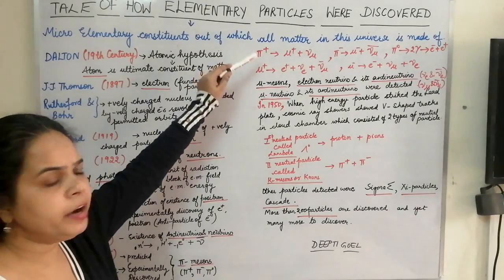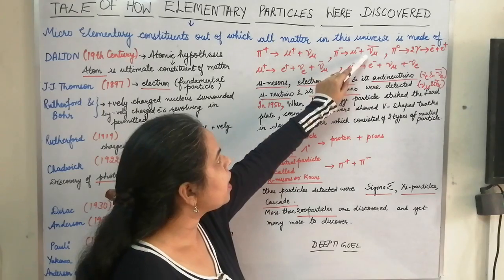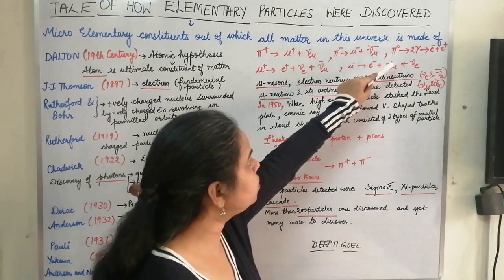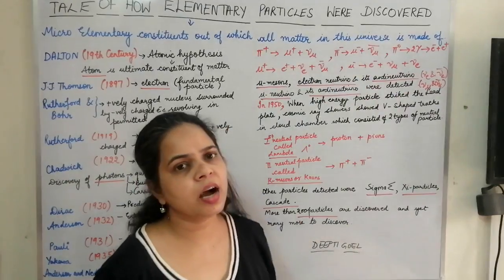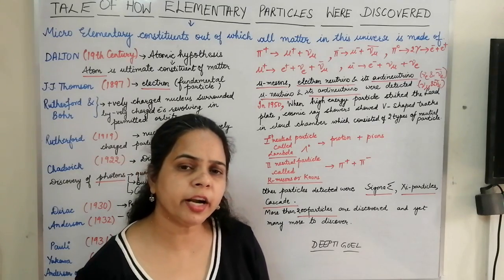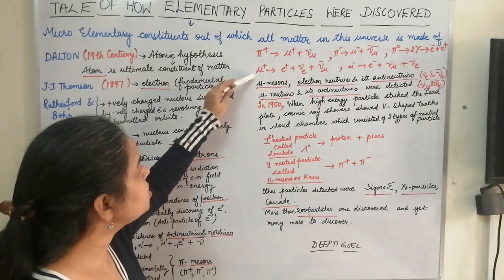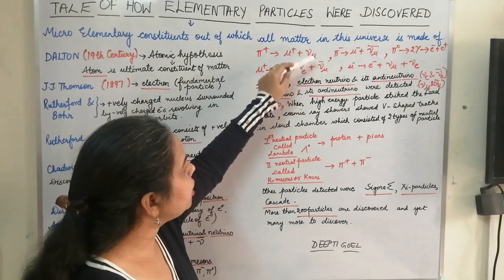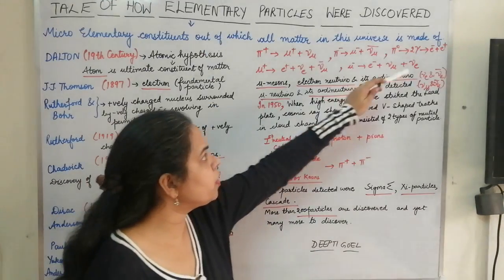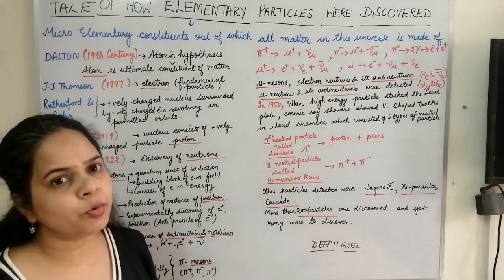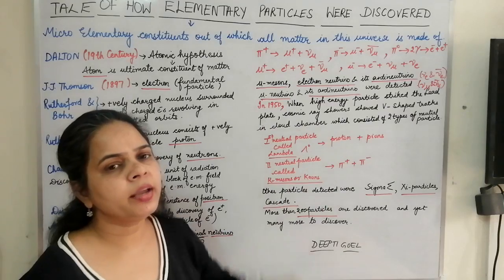Pi positive mesons decay into mu positive and a mu neutrino; pi negative mesons decay into mu negative and mu antineutrino. The neutral pi meson decays into two gamma rays because its decay time is very small. If the gamma has energy of approximately 1.02 MeV, it can internally convert into an electron-positron pair. Mu positive breaks into a positron, electron neutrino, and mu antineutrino. Mu minus decays into an electron, mu neutrino, and electron neutrino. Through these decay processes, mu mesons, electron neutrinos, and their antineutrinos can be detected.